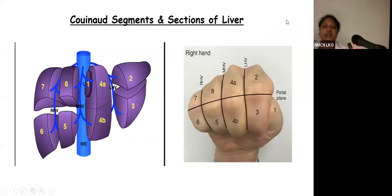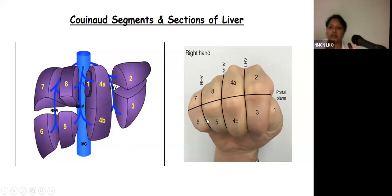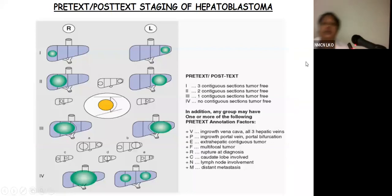Coming to the basic anatomy of the liver: the liver is divided into right and left lobes on the basis of the Cantlie's line, and further divided into 8 segments by Couinaud, which are divided into 4 sectors. The left lateral sector includes segments 2 and 3, the left medial sector includes segments 4a and 4b, the right anterior sector includes segments 5 and 8, and the right posterior sector includes segments 6 and 7. Based on these sectors, PRETEXT and POST-TEXT staging of hepatoblastoma is done. PRETEXT stage is pre-treatment staging; POST-TEXT is post-neoadjuvant chemotherapy extent of tumor. It has 4 stages: PRETEXT 1 — three contiguous sections tumor-free; Stage 2 — two contiguous sections tumor-free; Stage 3 — only one contiguous section free; Stage 4 — none of the sections free.